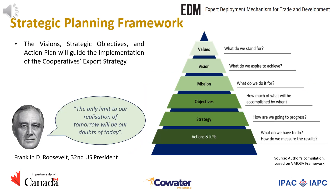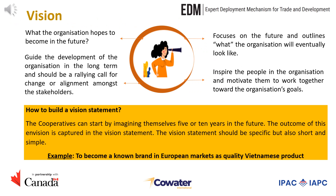Having a clear vision and goal will help direct your export development endeavour. As Franklin Roosevelt, the 32nd US President, said: the only limit to our realisation of tomorrow will be our doubts of today. It is important for cooperatives to lay out their values, vision, mission, strategic objectives and an action plan to guide their strategy. Values represent what you stand for. Vision looks at what you aspire to achieve. Mission is what you do it for. Objectives refer to how much of what will be accomplished by when, and strategy refers to how progress will be achieved. The action plan sets out what has to be done, and KPIs provide a way of measuring the results.